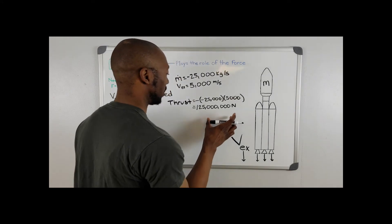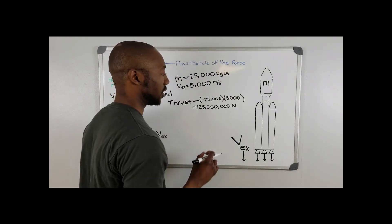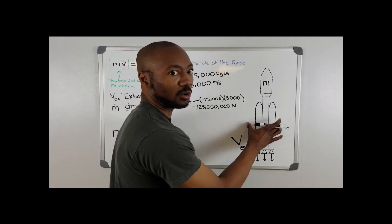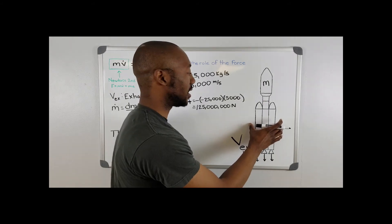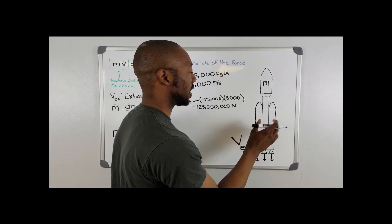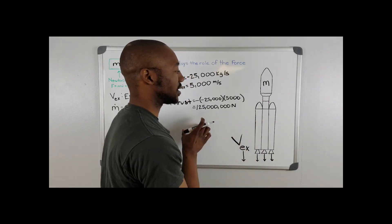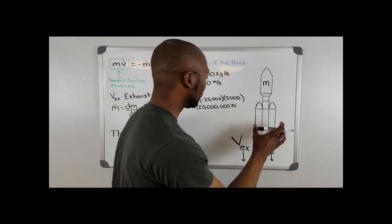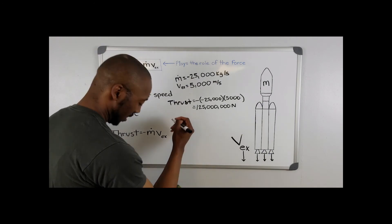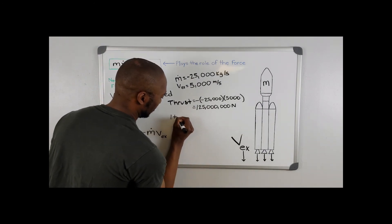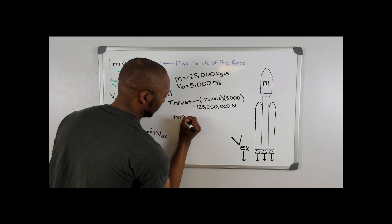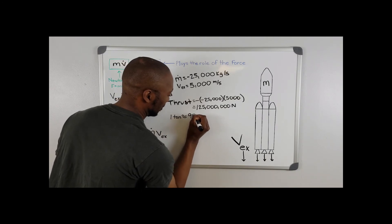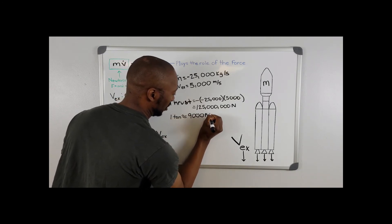Now, we need to convert this into tons, because we need to understand that the initial weight of the rocket is going to be in tons. We need to make sure that the amount of thrust is going to be greater than the initial weight of our rocket if it's going to take off. So one ton is about 9,000 newtons.